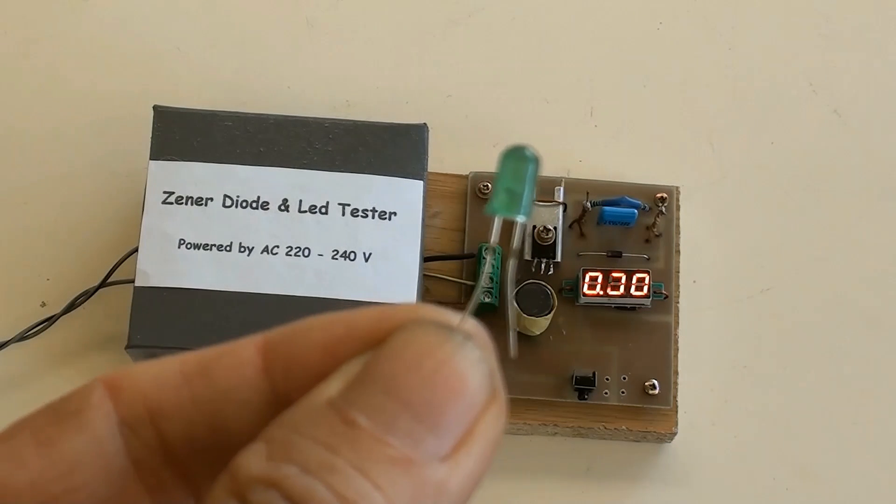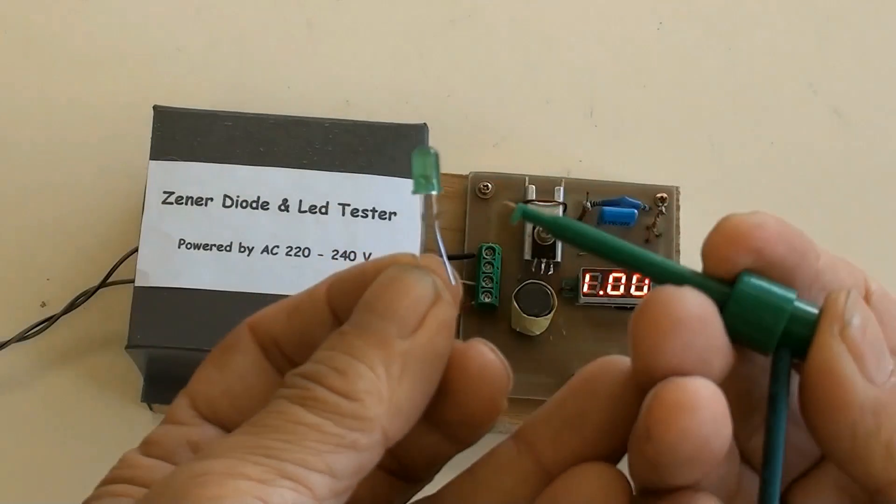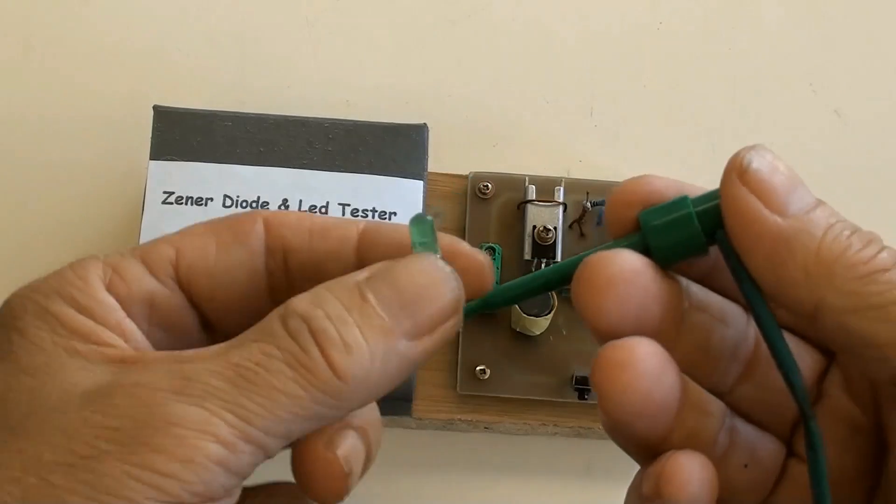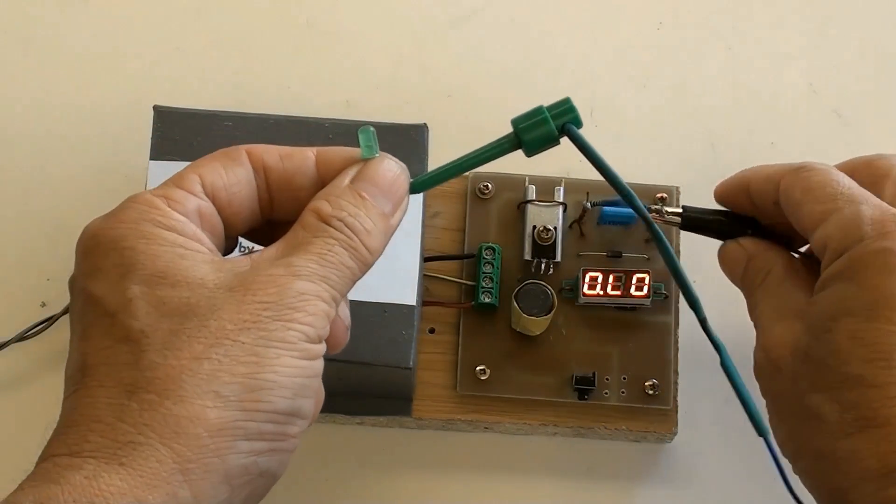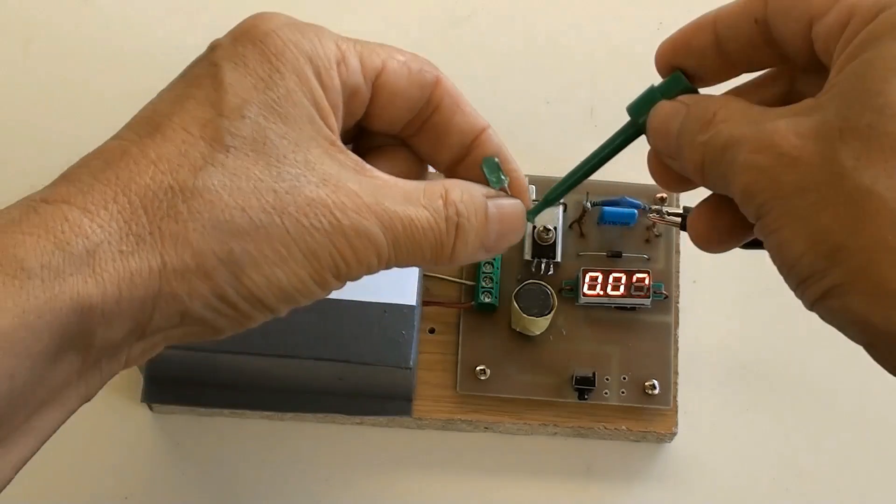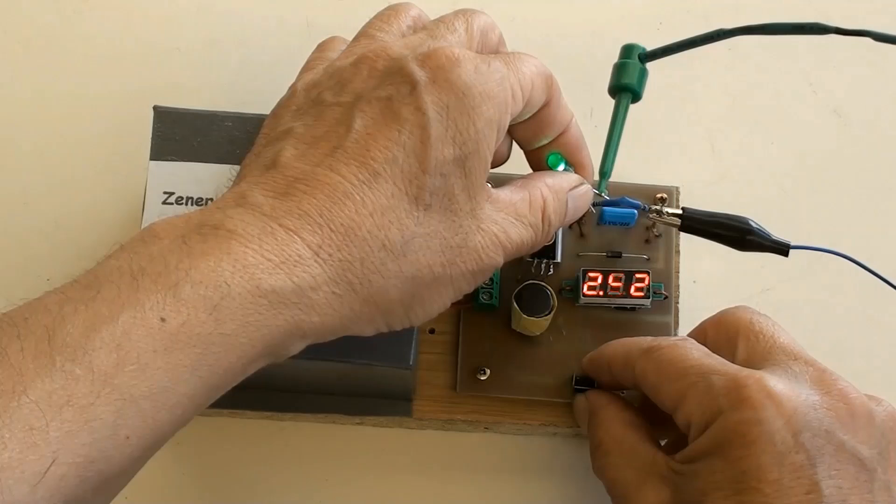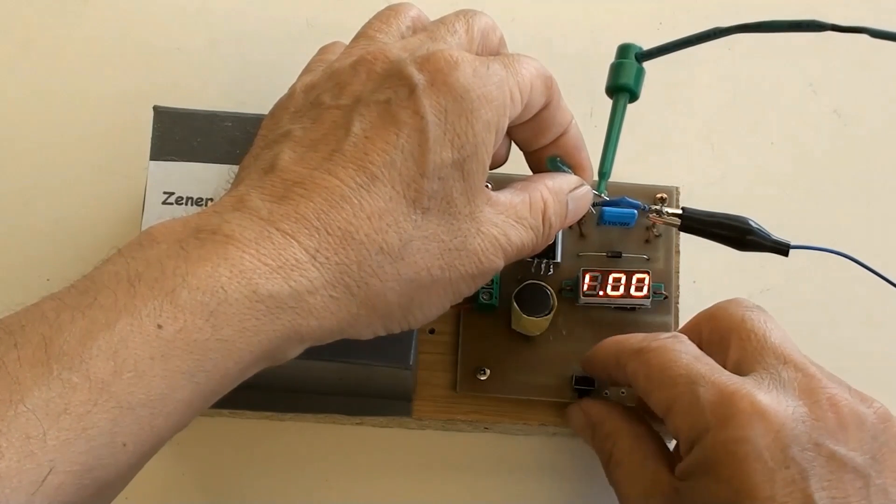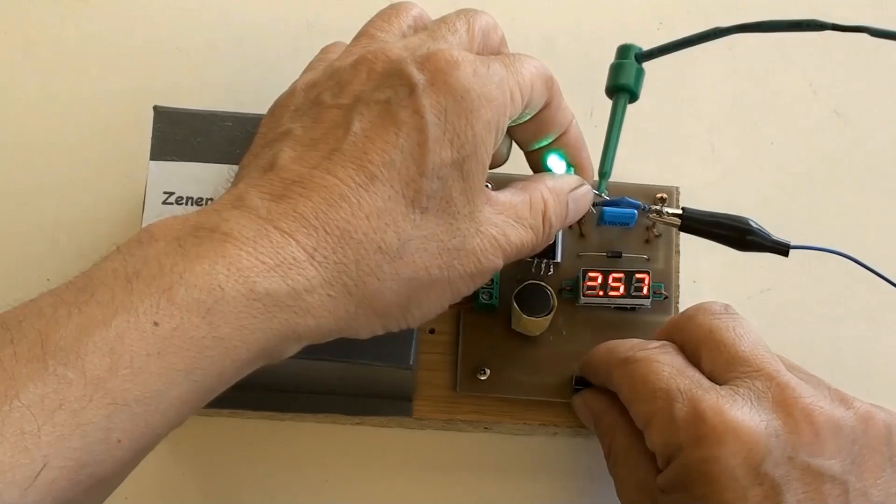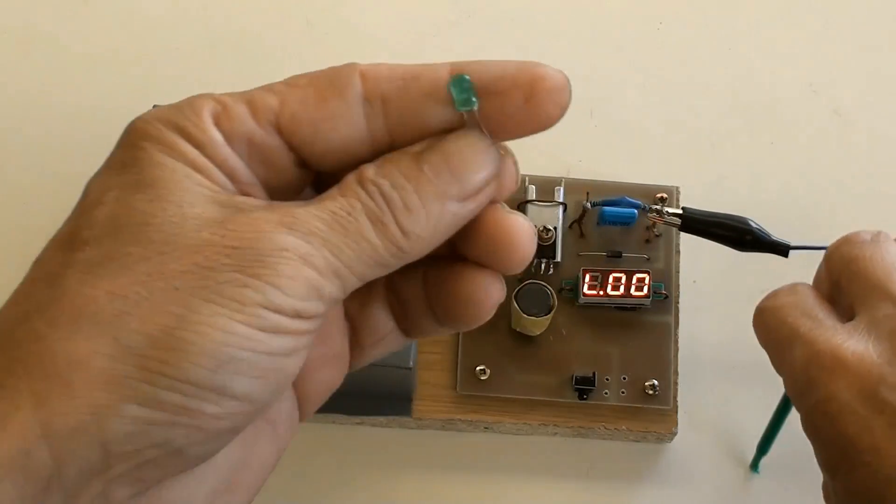Going to test this green lead with help of this mini hook accessory. The mini digital voltage meter showed a voltage value of 2.52 volt, so this is 2.5 volt green lead.